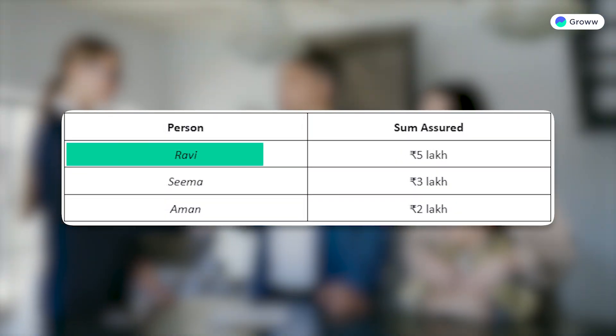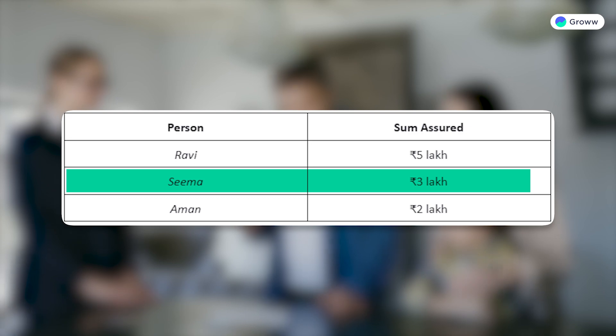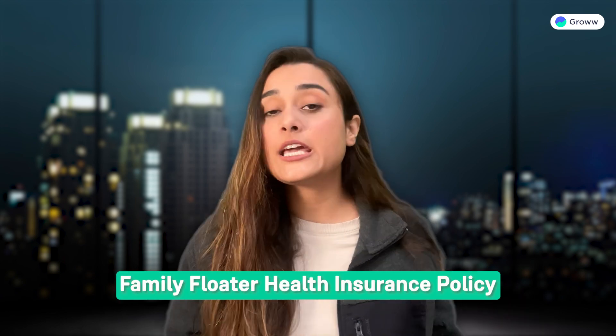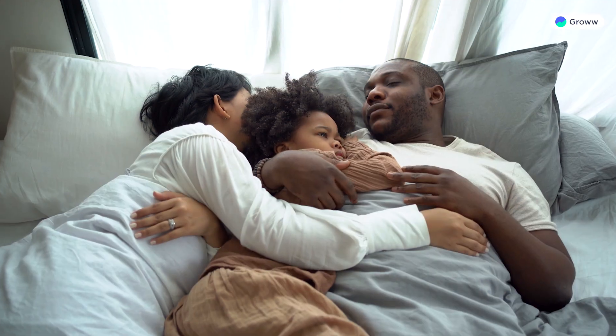In the individual health insurance policy, every member has a different policy, so each member has a dedicated coverage amount. In the family floater plan, which covers the entire family, if you have a 10 lakh family floater plan, there is one benefit: if only one family member is hospitalized in the whole year, they can use the entire 10 lakh coverage. That means extra flexibility.